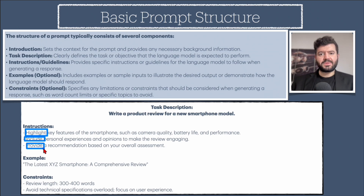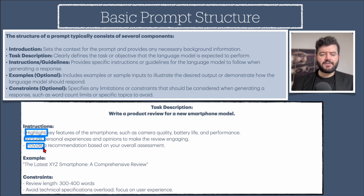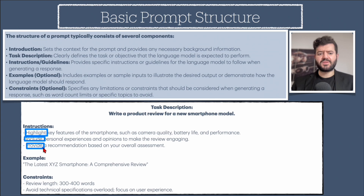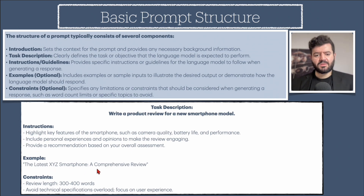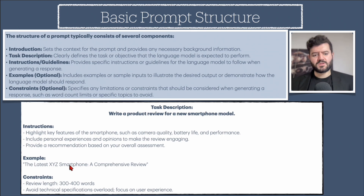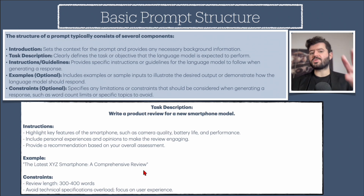Action verbs like highlight, include, separate, and list are guidelines for a prompt — we cover these in detail in this course, and there's a blueprint you can download. For the example, we also provide a reference: 'The latest XYZ smartphone — a comprehensive review. Create a comprehensive review using this smartphone as an example.' Then we add constraints: review length 300 to 400 words, avoid technical specifications overload, focus on user experience only.